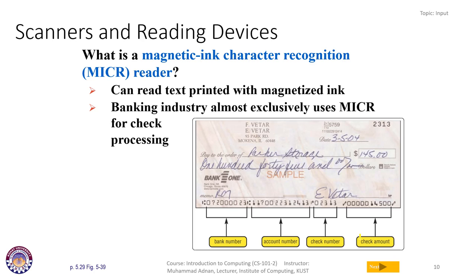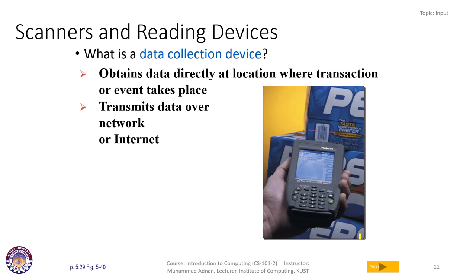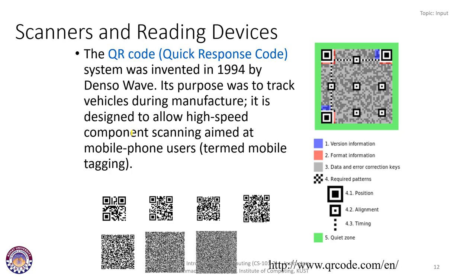We also have data collection devices that obtain data directly at the location where a transaction takes place. For example, you can directly scan barcodes and the data is transferred to the device, which can then transmit that data over a network or the internet. We also have the latest QR codes — Quick Response codes — invented in 1994 by Denso Wave, originally designed to track vehicles during manufacturing and allow high-speed component scanning, aimed at mobile phone users.